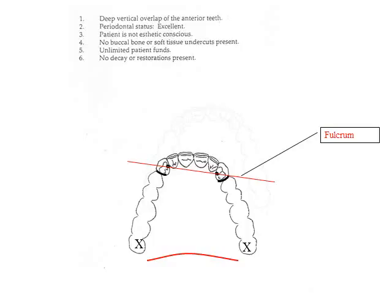Placement of the rest seats defines the fulcrum line. The palate may act as a third rest, particularly if the tissue is firm and the palate is of a broad, flat configuration.